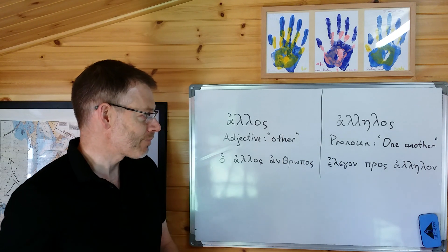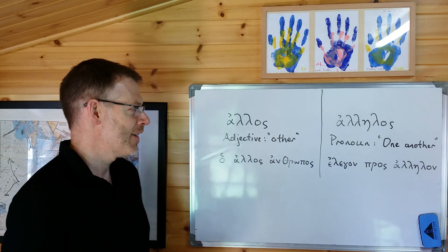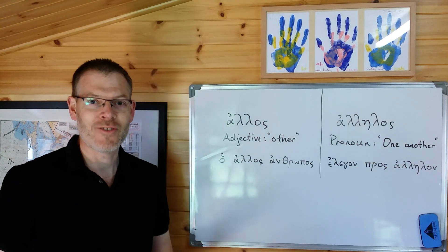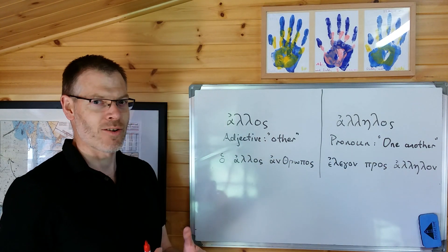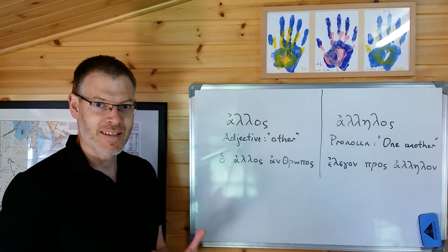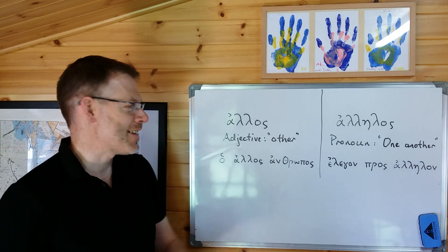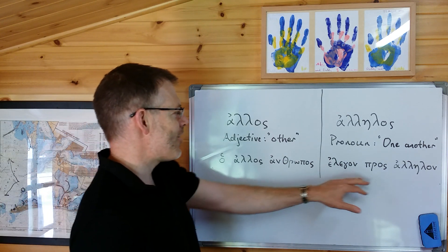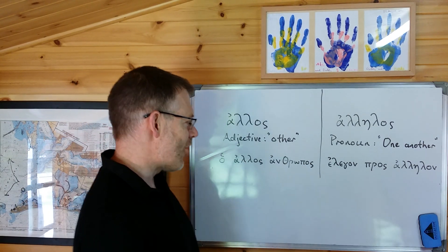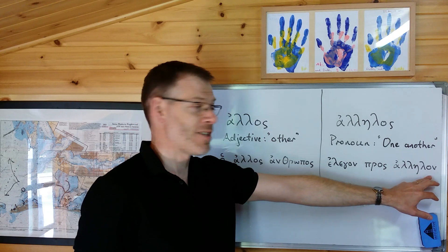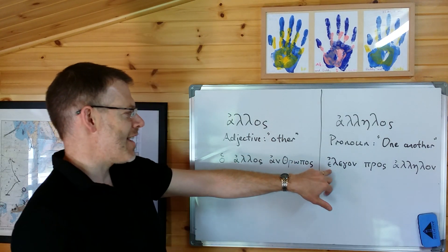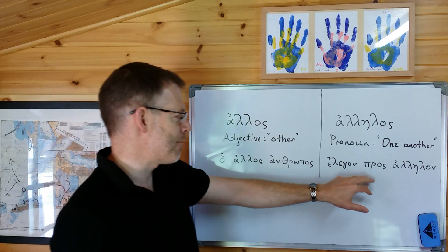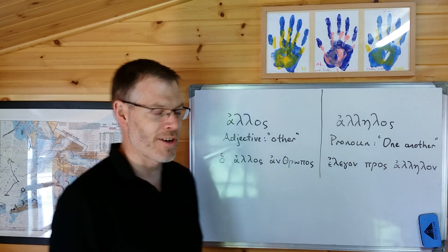Whereas alelos is a pronoun, and because of its meaning, as Duff points out, it's never used in the nominative case, because you wouldn't make 'one another' the subject of a verb — but it can be used in all the other cases. Here's an example of how that's used: elegon pros alelon — so you've got the accusative; it's the imperfect third plural of lego, 'I speak, say or tell' — they were saying pros alelon, 'to one another.'